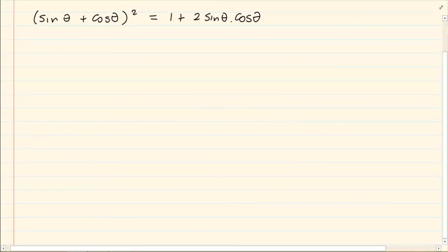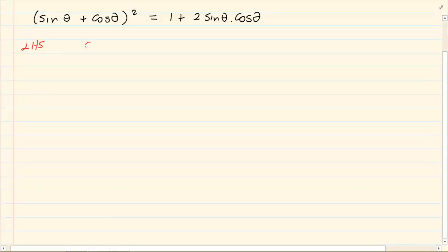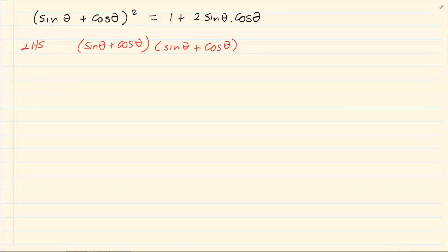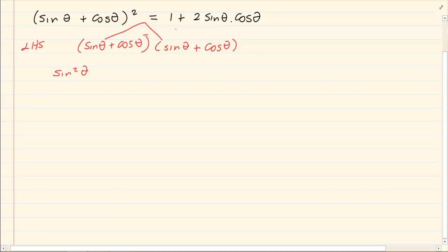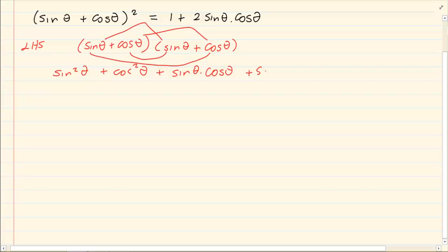Looking at the following example, again you notice that everything is sin and cos, so we solve it using algebraic methods. We have sin theta plus cos theta, all squared. If we expand the brackets, pupils sometimes get confused because it is sin and cos, but if I gave you x plus y times x plus y, you would use the foil method. So sin times sin gives sin squared theta, plus cos squared theta, plus sin theta cos theta.